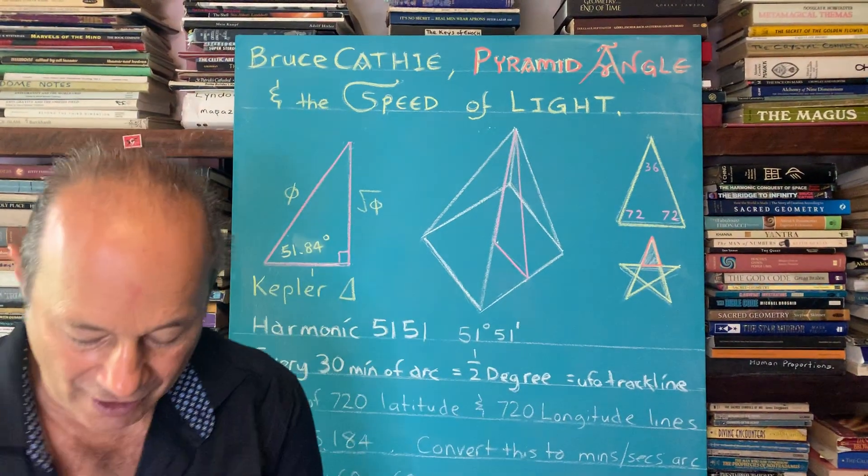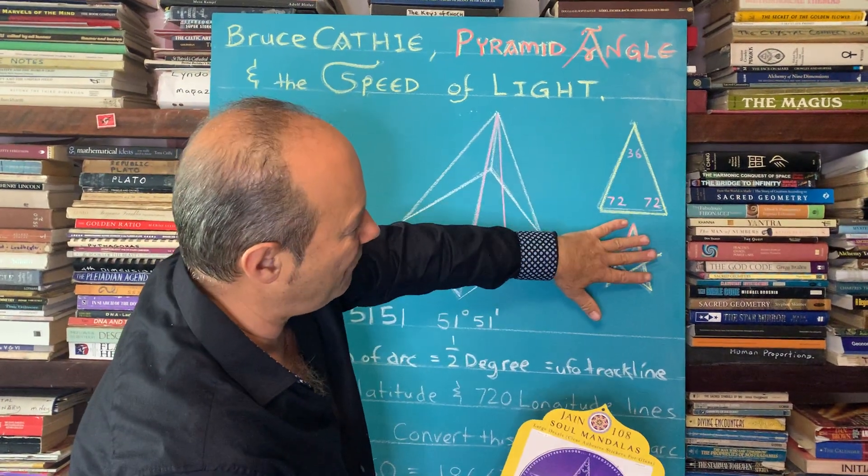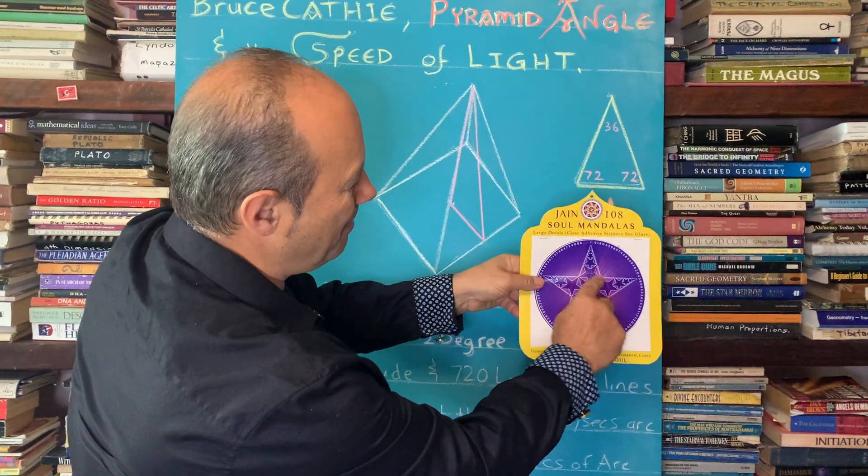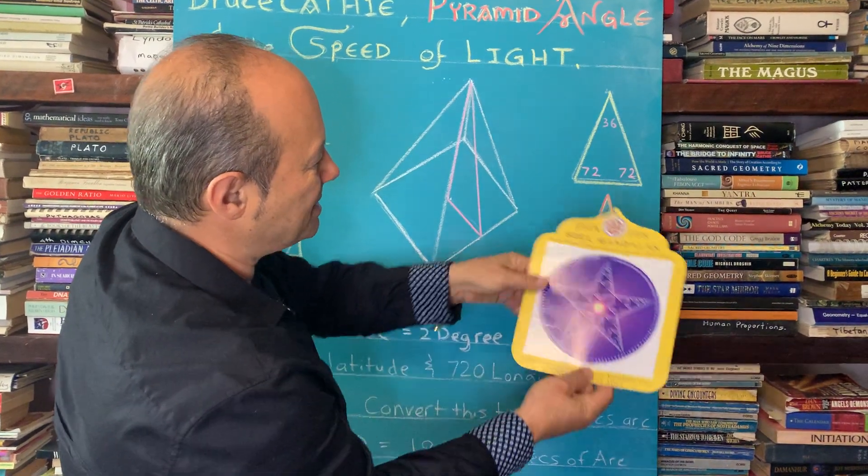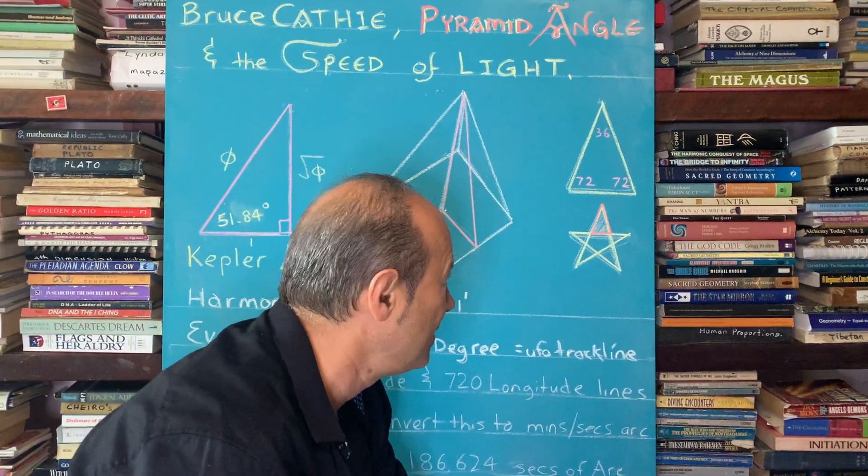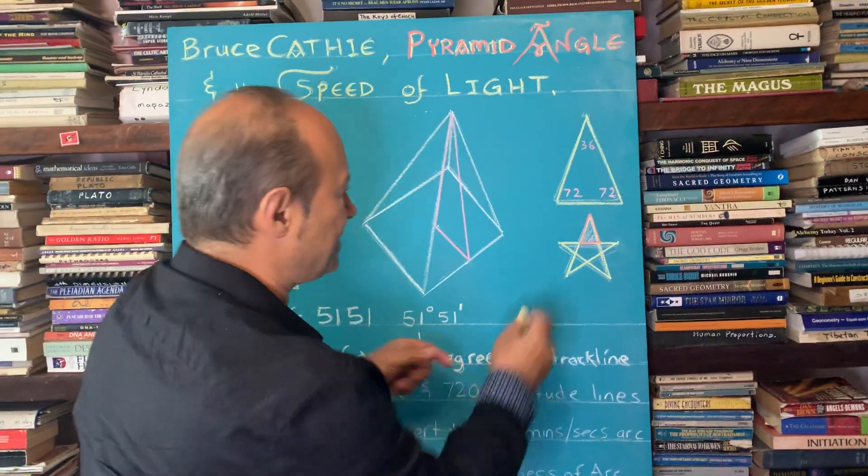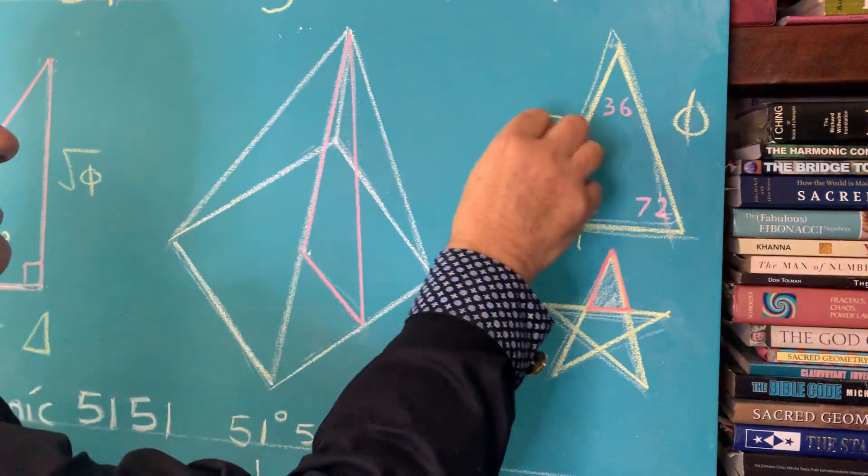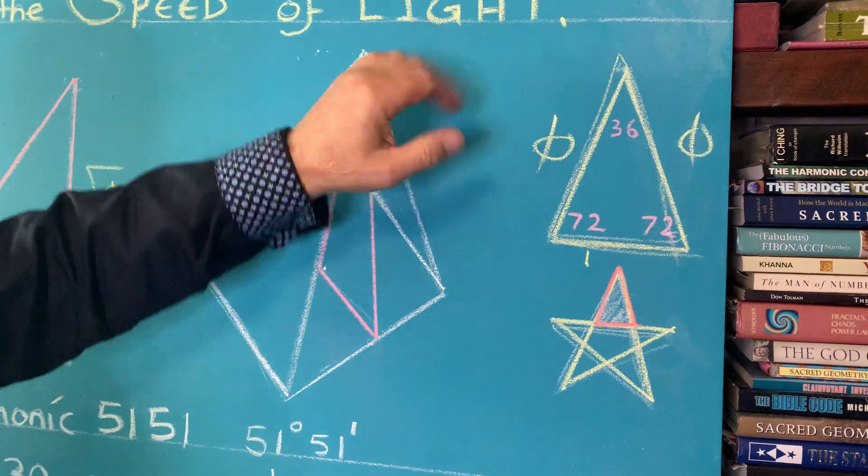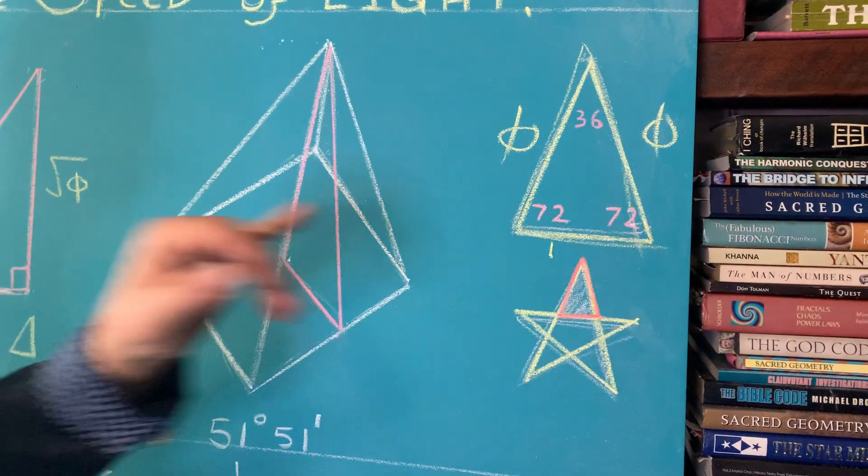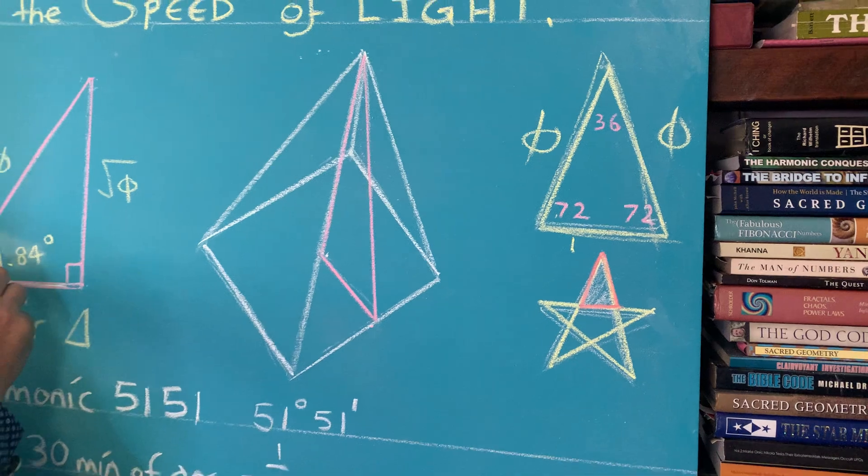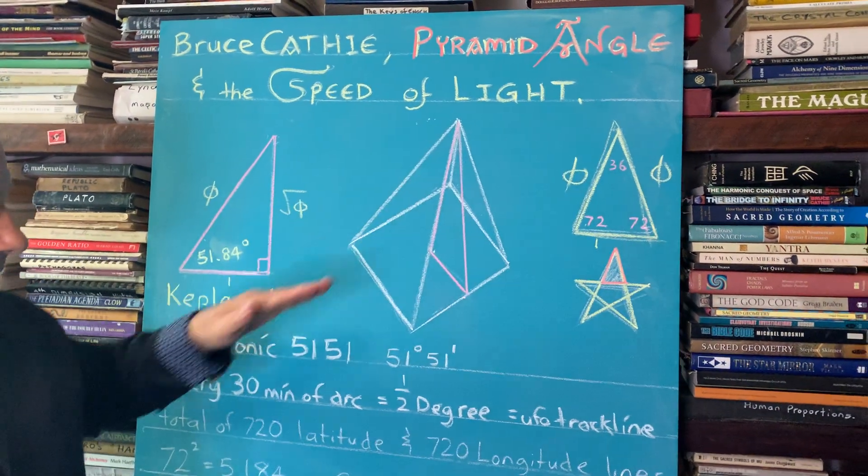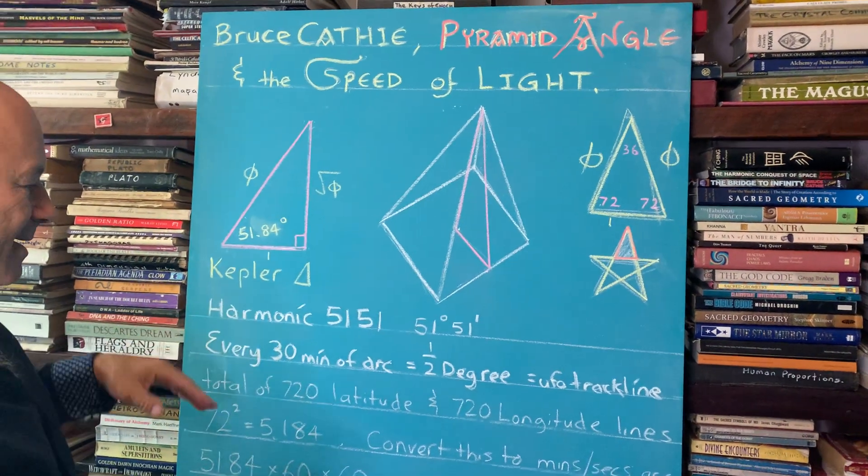That's taken from when you draw a five-pointed star. We take that top section there. If the base is 1, the slope height is phi. That's a golden triangle isosceles. And the base angles are 72. So 72 plus this angle of the pyramid are the critical things to convert the pyramid angle into light, into the light harmonic, speed of light.